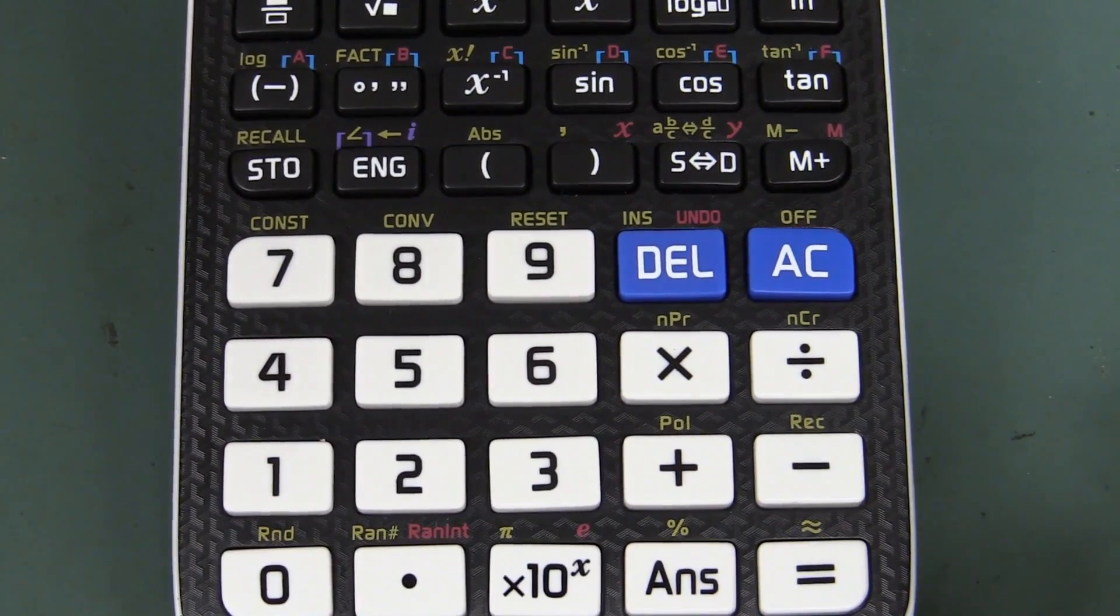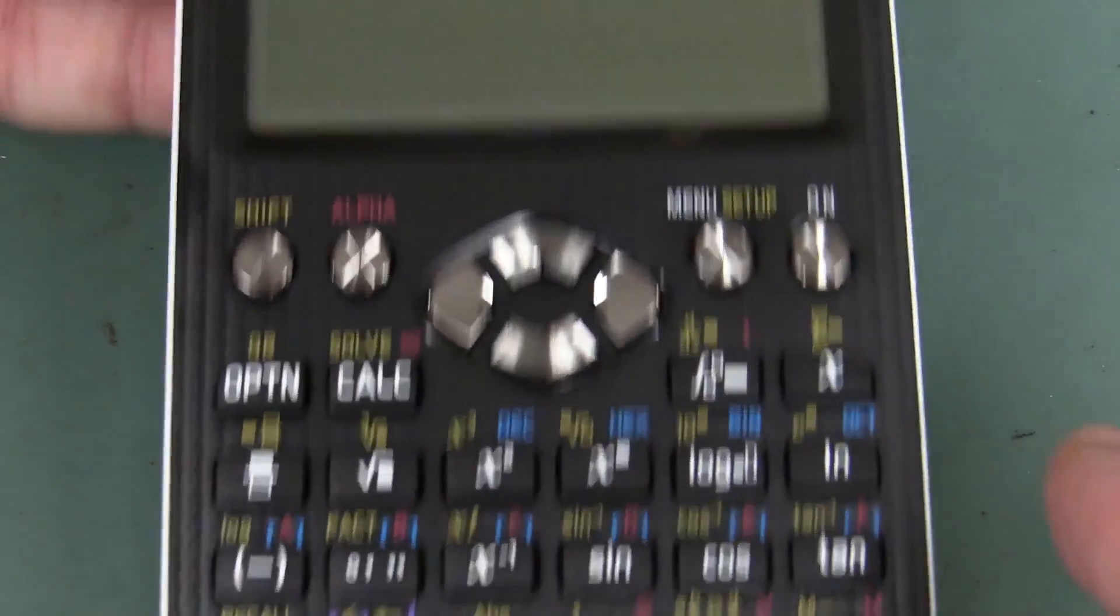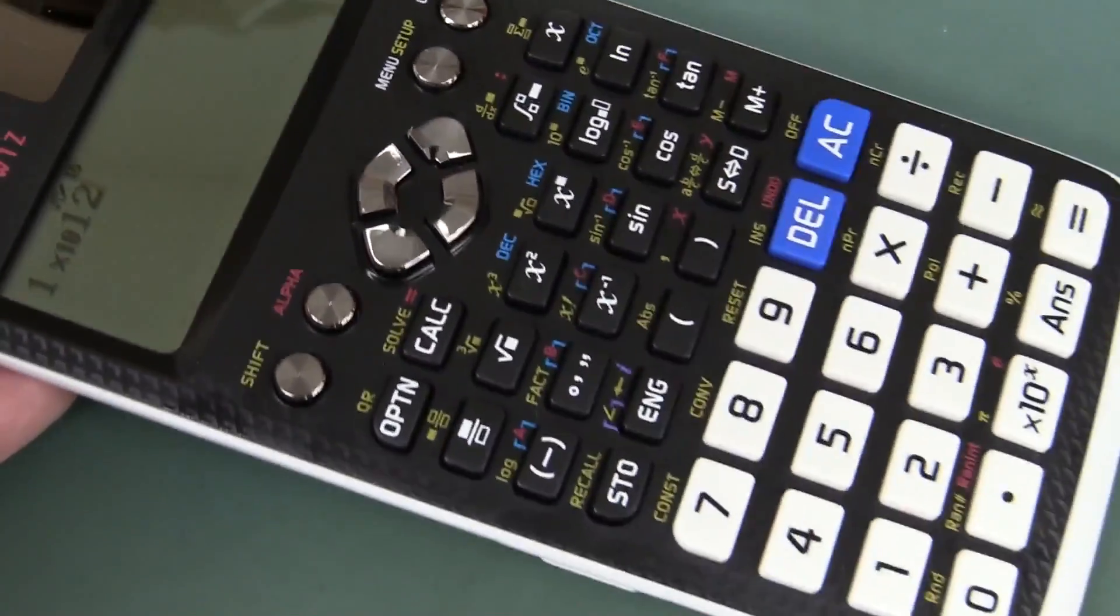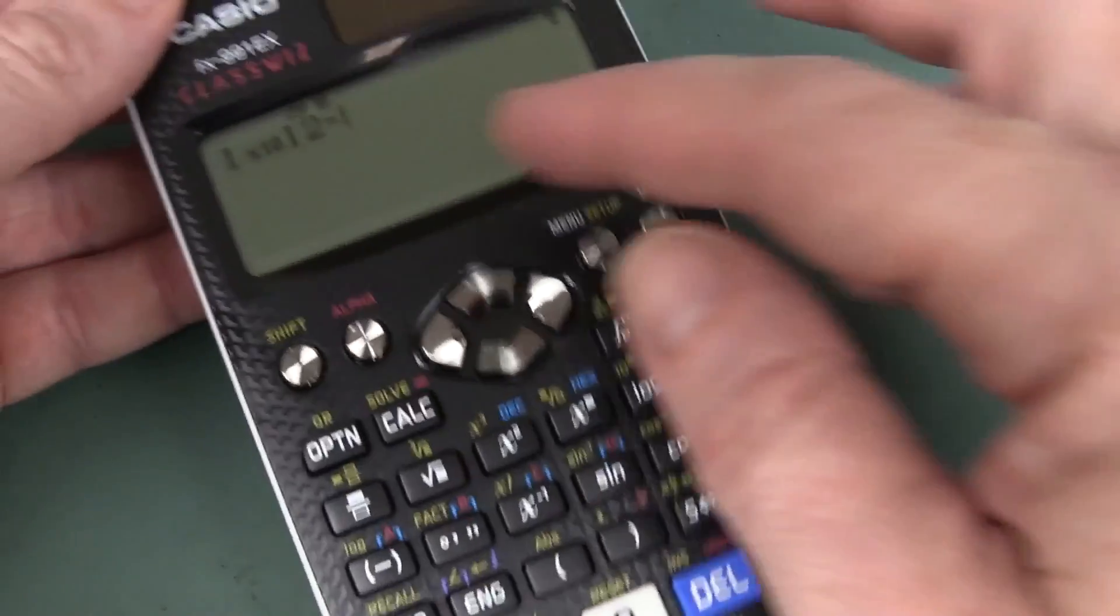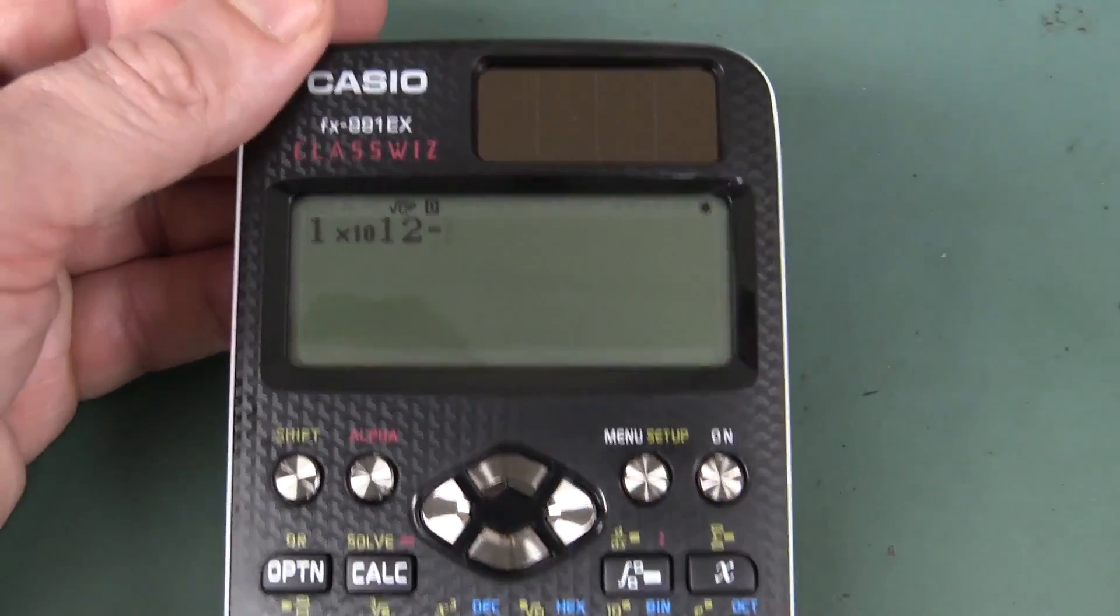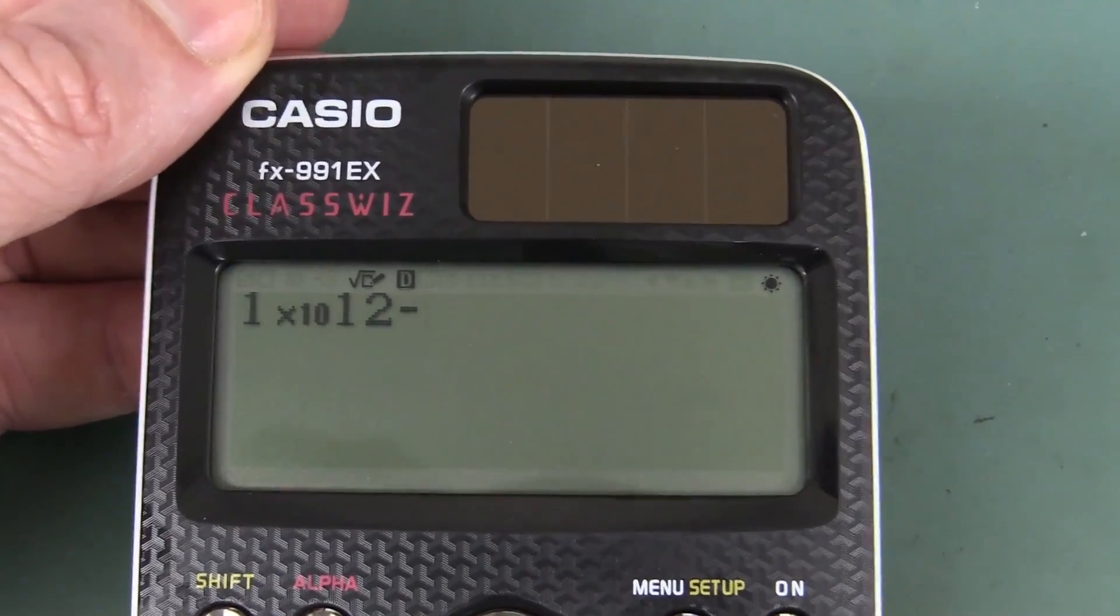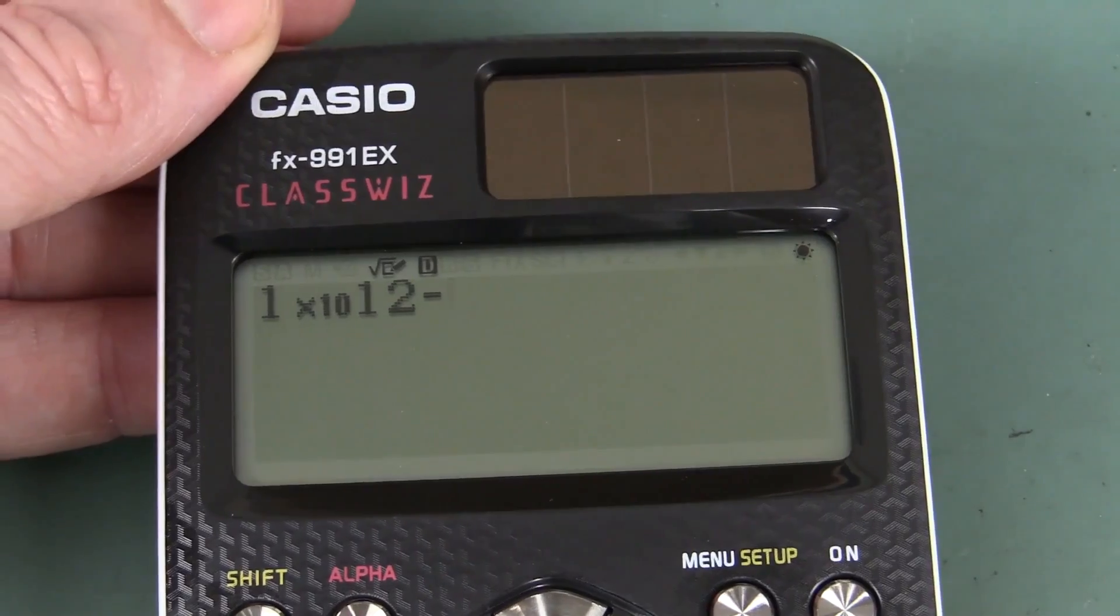So if you wanted to enter pico, you wouldn't have to go one times ten to the power of minus twelve. And look, it doesn't do it, you've got to do it in the right order. This is the VPAM, visually perfect algebraic method, rubbish. I prefer the old Casios, but this thing is ridiculously powerful though.